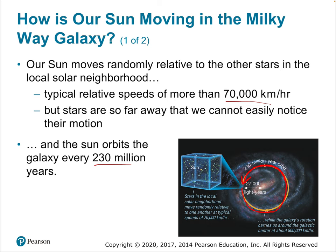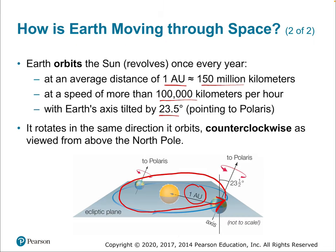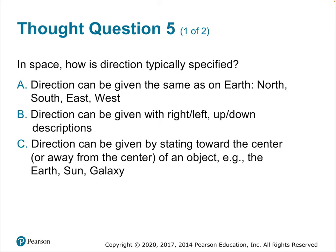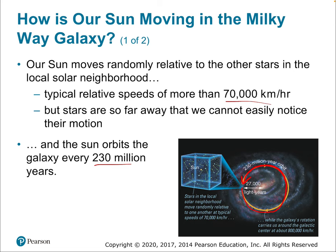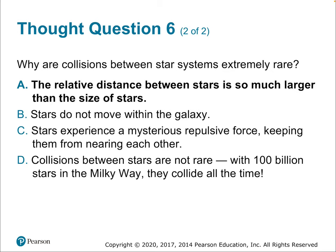As we move through different parts of the galaxy, we are exposed to different levels of radiation from space, which scientists think affects our atmosphere and climate over very large timescales. Why are collisions between star systems so rare? Because the relative distance between them is so much larger than the size of the solar systems themselves — solar systems are the size of parks, but the distance between them is the entire continental United States.